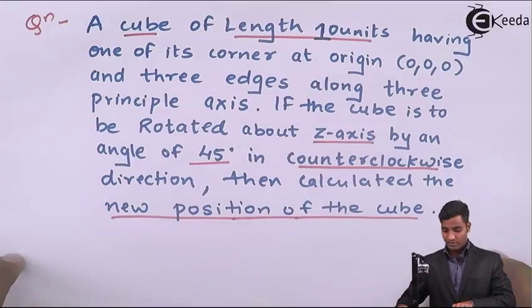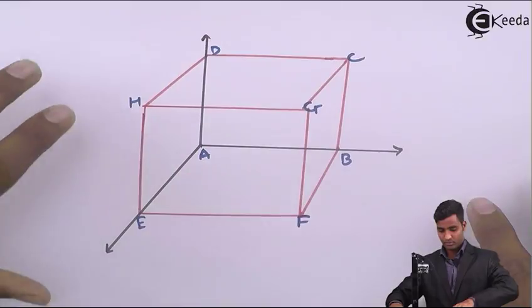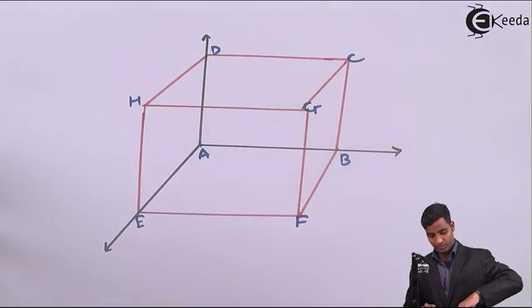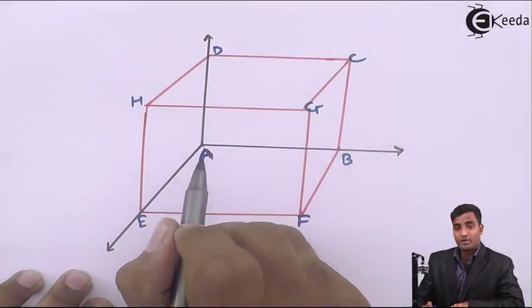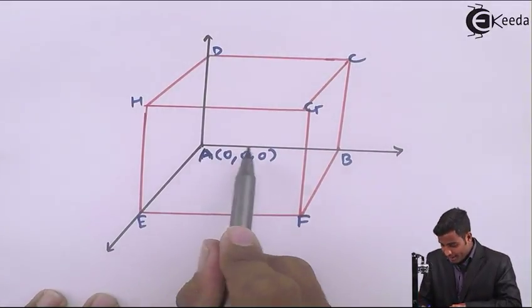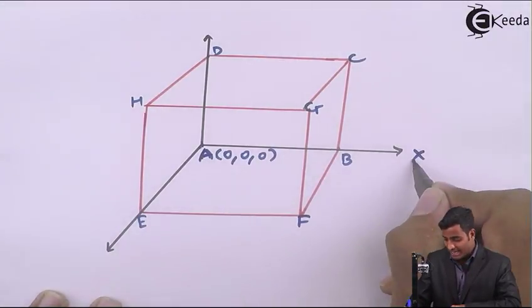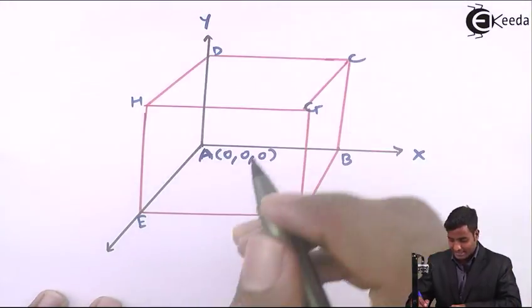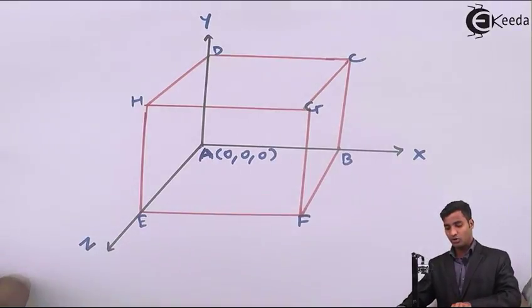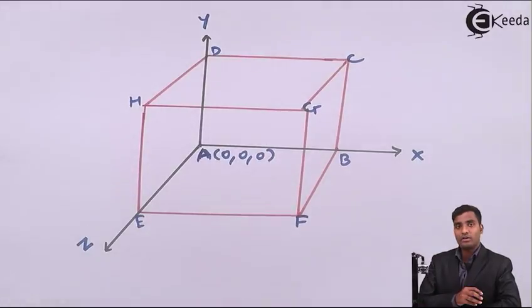Now we will start with the solution. First of all, we will draw the cube. One of its corners is at the origin and three edges — AB, AD, and AE — are on the principal axes. AB is on the x-axis, AD is on the y-axis, and AE is on the z-axis. So both conditions are fulfilled: one corner is at the origin and three edges are along the three principal axes.